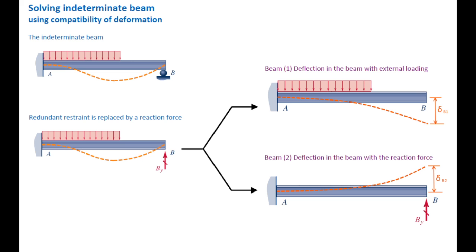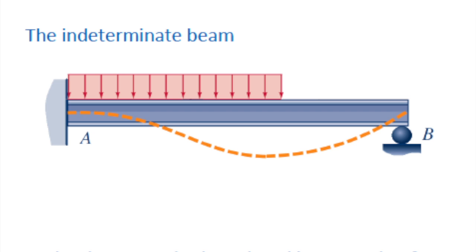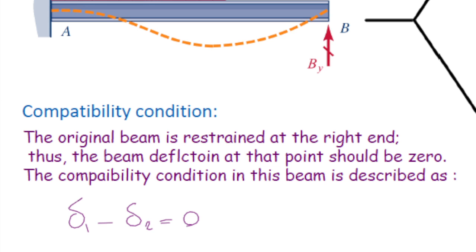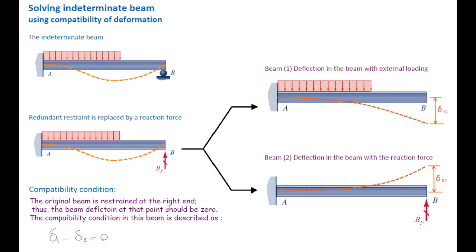The second beam is the same beam, but subjected to the reaction force B-y. We can determine how much the deflection of this beam is at that point. Now, what is the deformation of the original beam at point B, at the right end? It is zero because that point is restrained by a roller. So delta 1 minus delta 2 equals zero — that is the compatibility of deformation.